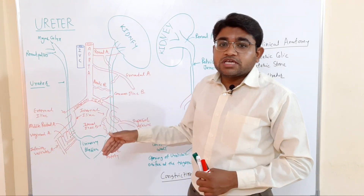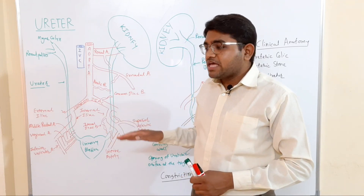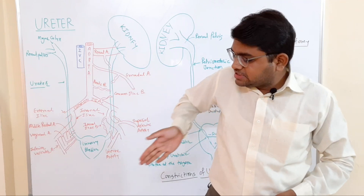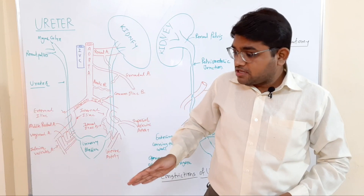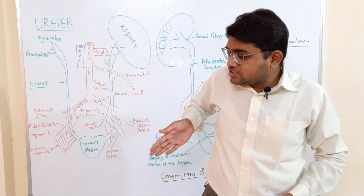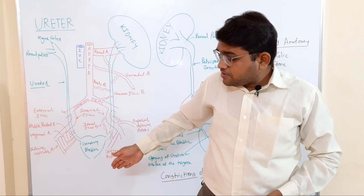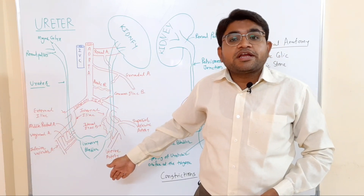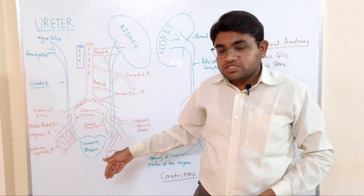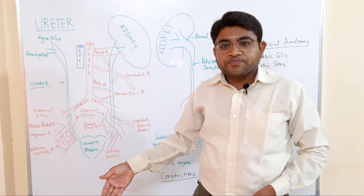Inside the pelvis, the ureter runs on the lateral pelvic wall and crosses the pelvic brim. After crossing the pelvic brim in the lesser pelvis, it runs downward, backward, and laterally along the anterior margin of the greater sciatic notch, reaching up to the ischial tuberosity.